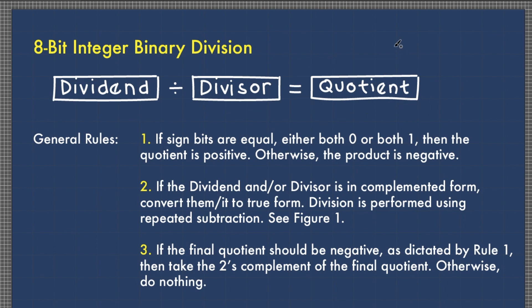In performing division of 8-bit binary numbers, we apply the following rules. Rule 1: if sign bits are equal, either both 0 or both 1, then the quotient is positive. Otherwise, the quotient is negative. Rule 2: if the dividend and/or divisor are in complemented form, convert them to true form. Division is performed using repeated subtraction, as shown in figure 1.